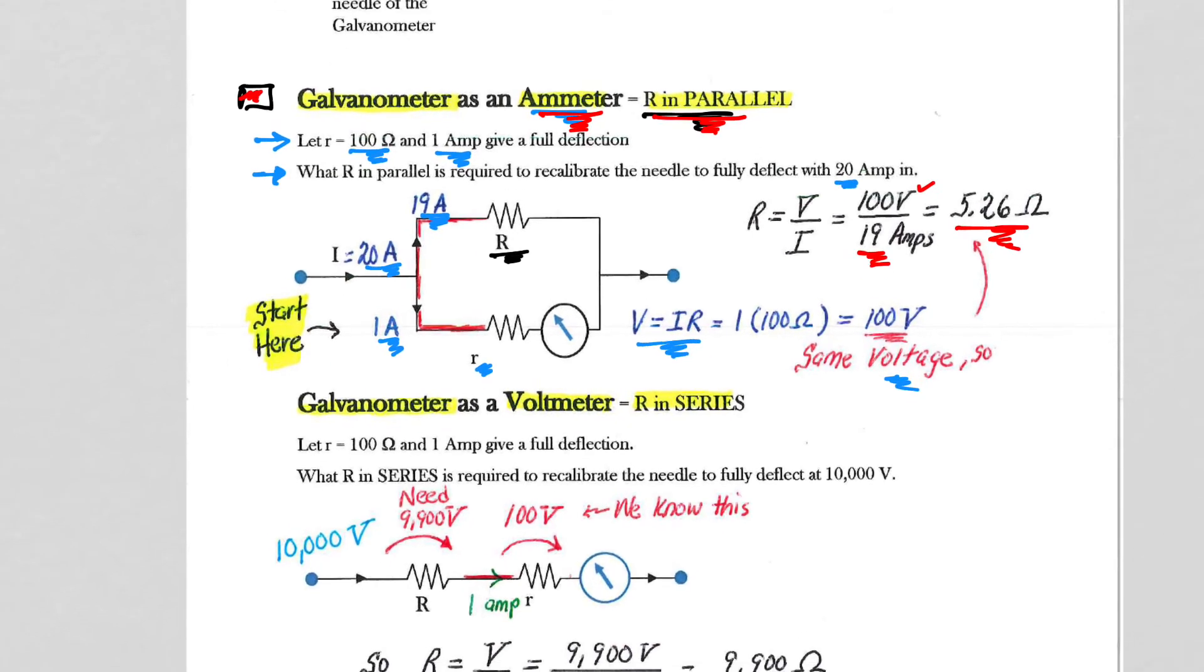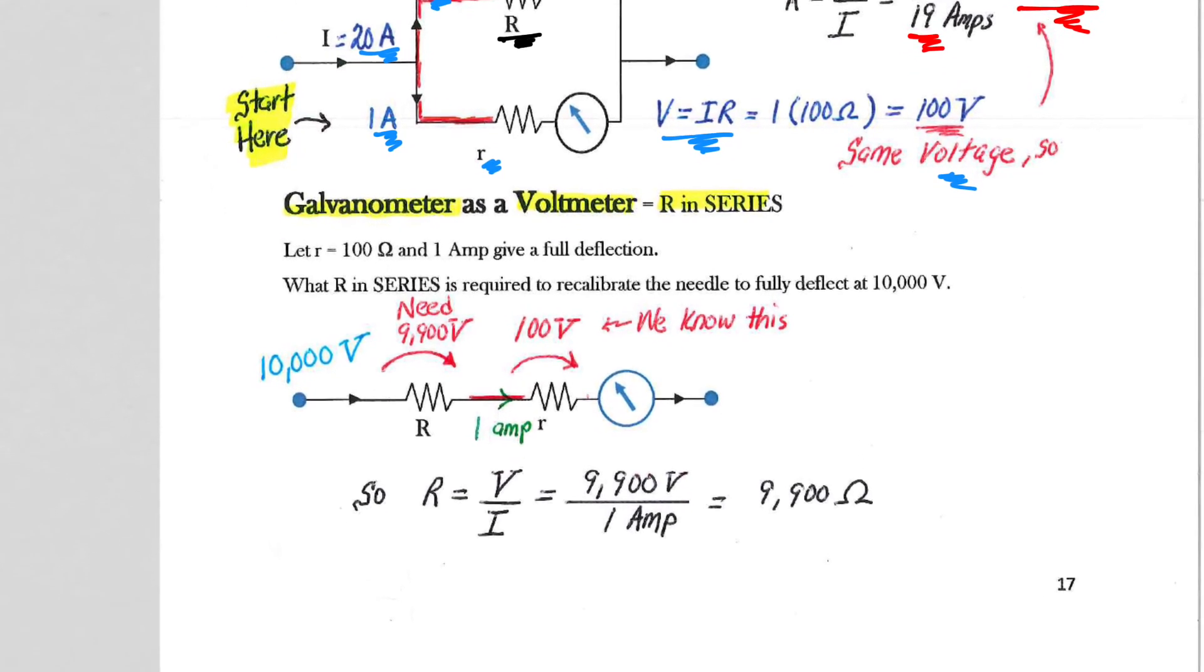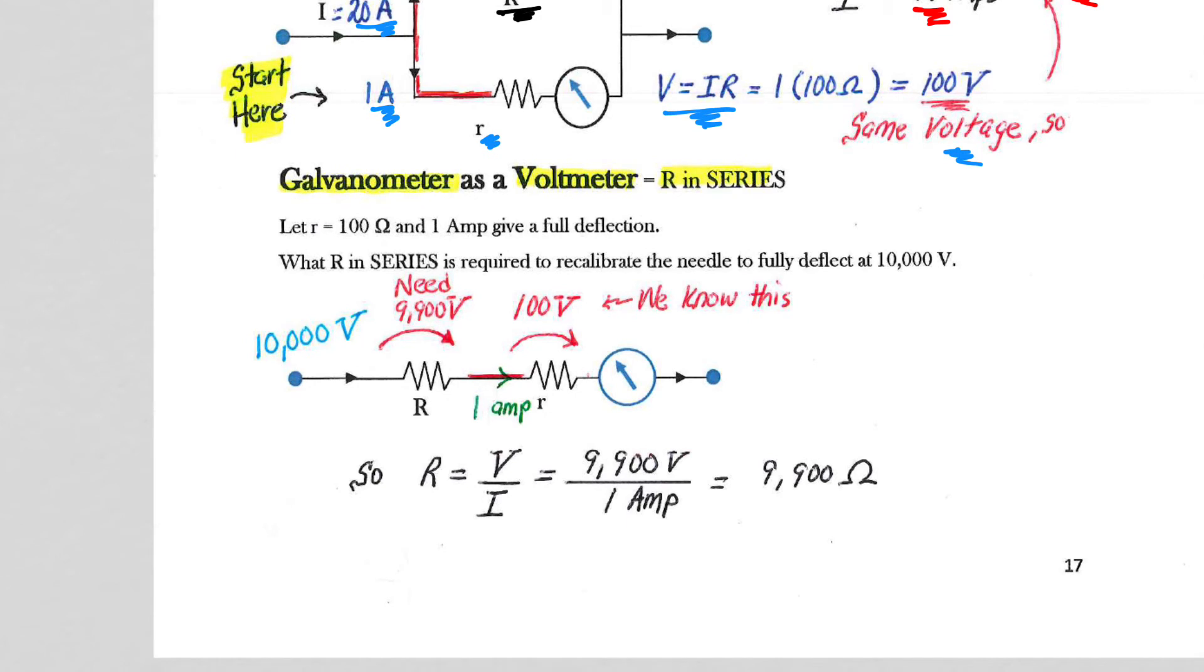The other function for a galvanometer, as it says here, is to let the galvanometer function as a voltmeter. You need to focus your initial calculations on everything about what is purchased out of the box galvanometer. Remember, if the little r, it's the same galvanometer, little r is 100 ohms at 1 amp, gives a full-scale deflection.